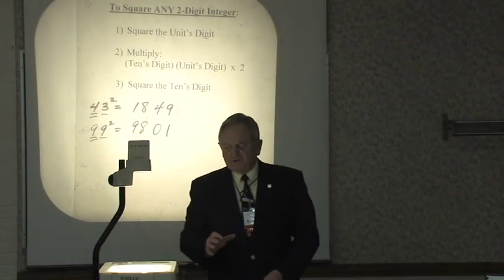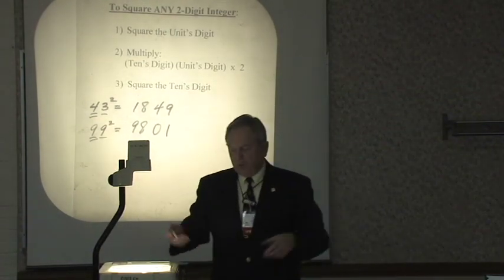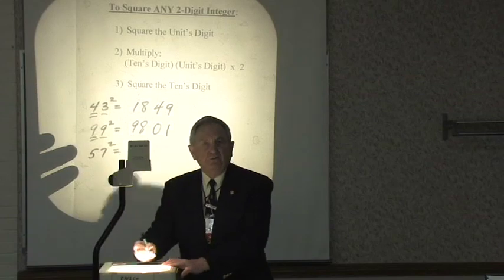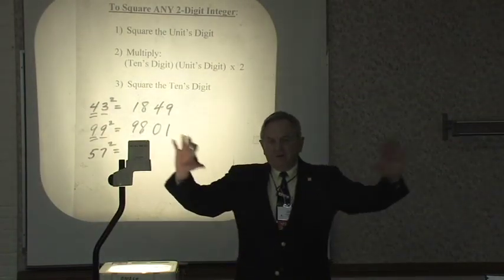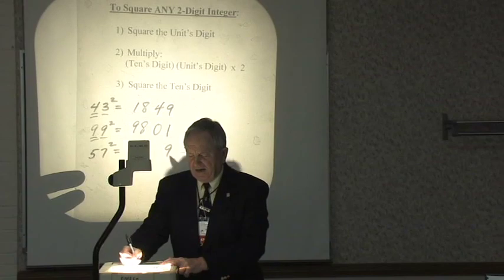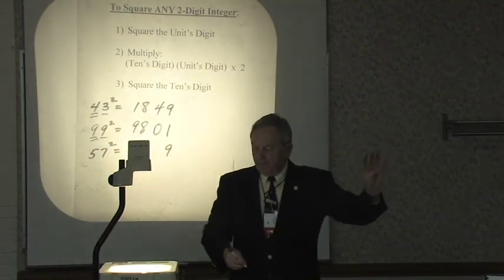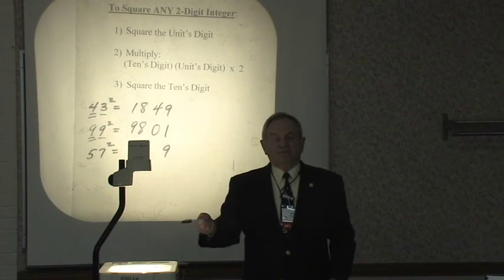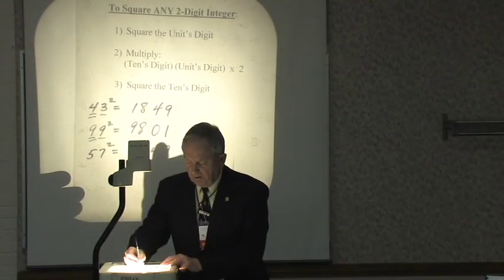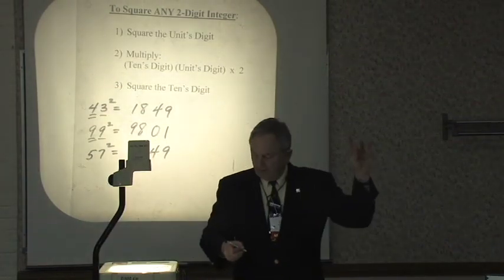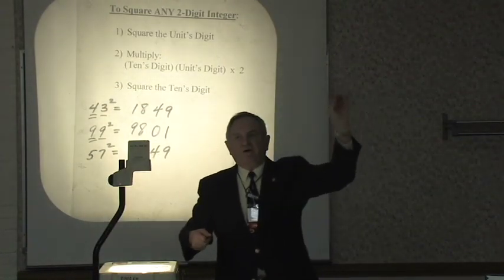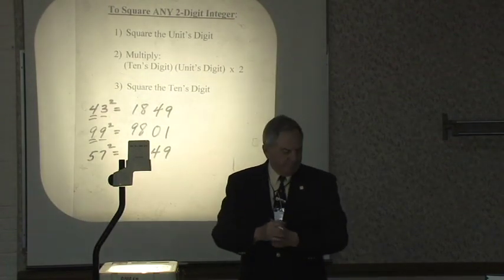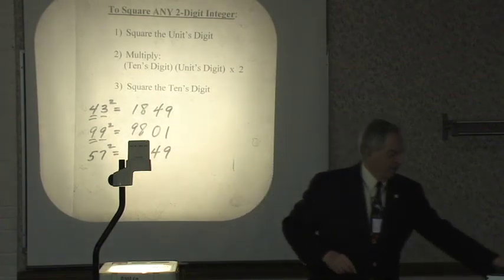Okay? But that's the way you square any two-digit number. So if we just did one more, let's do 57, and you know how to do that one already, too, because it begins with a 5. But if you didn't know that method, we'd say 7 squared is 49. Write down to 9, carry a 4. Multiply 5 times 7 times 2. That's 35, doubled is 70, and the 4 we carry is 74. Carry a 7. Last step, 5 squared is 25. 25 plus the 7 is 32, and we're finished. Okay?